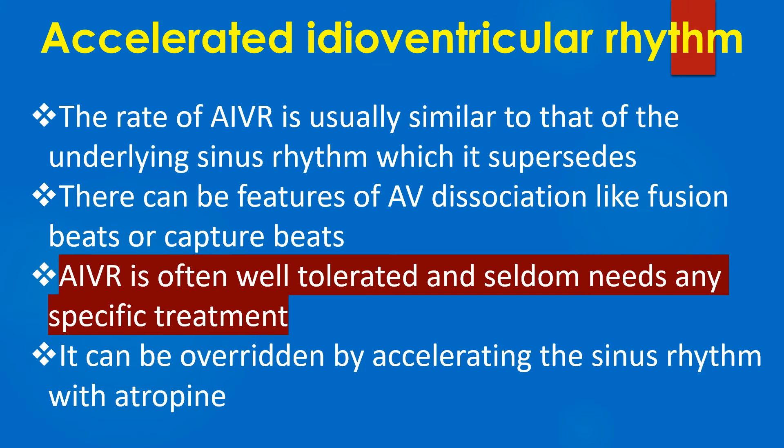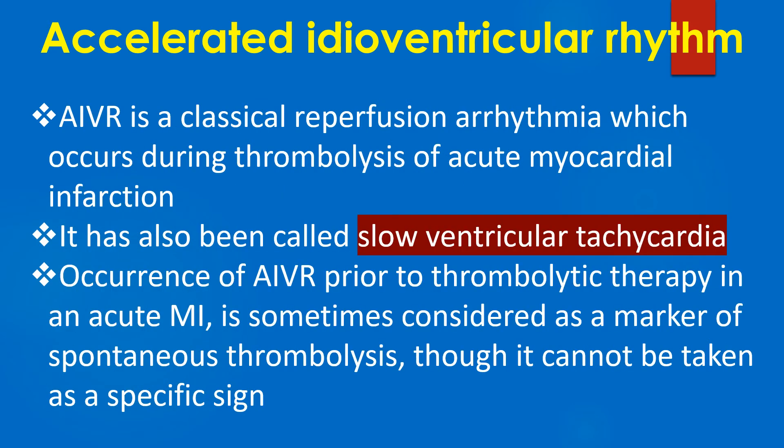The rate of AIVR is usually similar to that of the underlying sinus rhythm which it supersedes. There can be features of AV dissociation like fusion beats or capture beats. AIVR is often well tolerated and seldom needs any specific treatment. It can be overridden by accelerating the sinus rhythm with atropine.